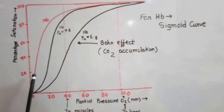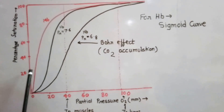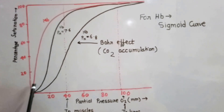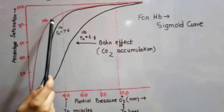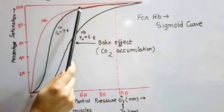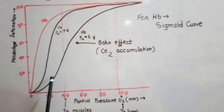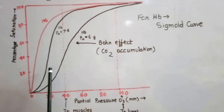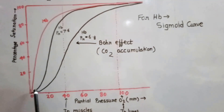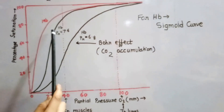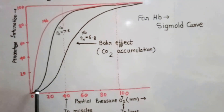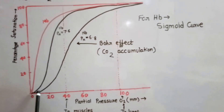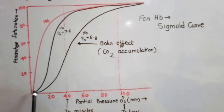The red curve is for myoglobin — it is a normal hyperbolic curve, meaning the saturation of myoglobin increases with increasing partial pressure of oxygen, reaching full saturation. The black curve is for hemoglobin — it is a sigmoid curve, meaning at first it increases very slowly, then there is a rapid increase, and then saturation. This type of S-shaped curve is the sigmoid curve.